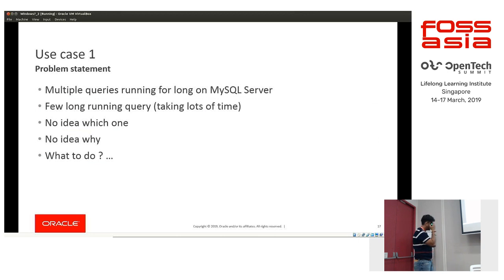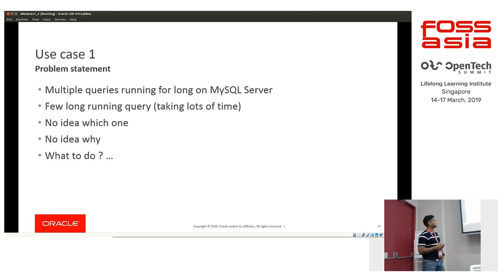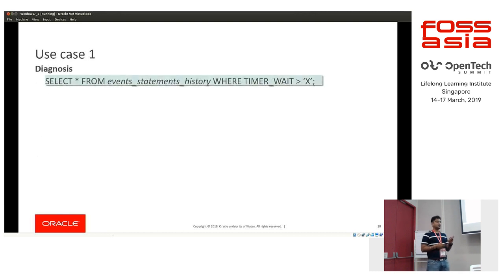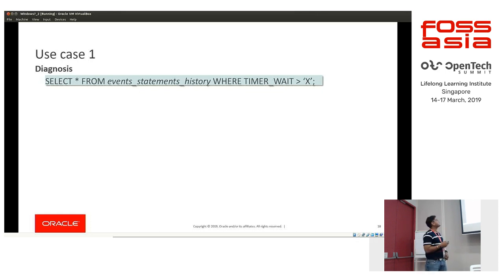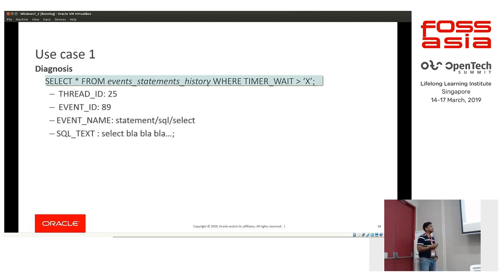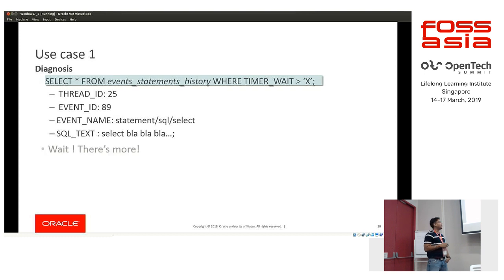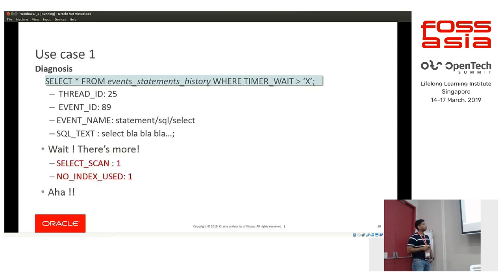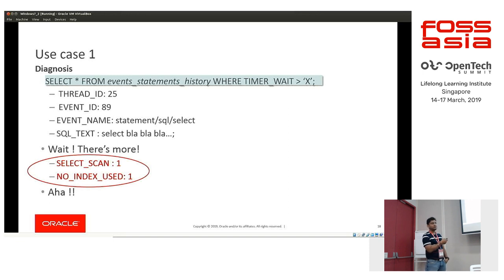For the first use case — finding a long-running query — let's say X is a threshold and any query taking longer than X is a long-running query. We have the events_statements_history table which gives historical data for each thread. We can query it for all statements taking longer than X. Performance Schema returns a SELECT statement with its text, and further shows that full_scan=1 and no_index_used=1 — meaning it did a full table scan with no index. If we could introduce an appropriate index, we might improve the performance of this query.